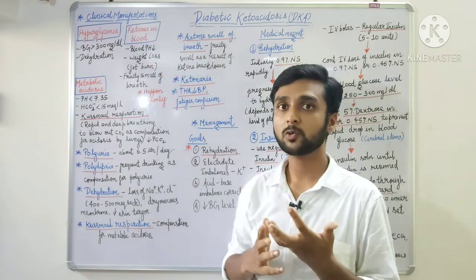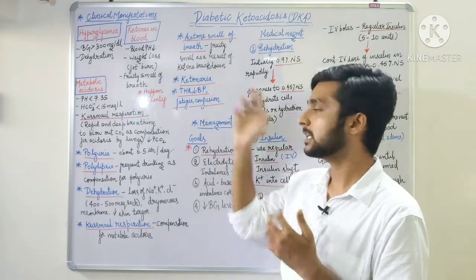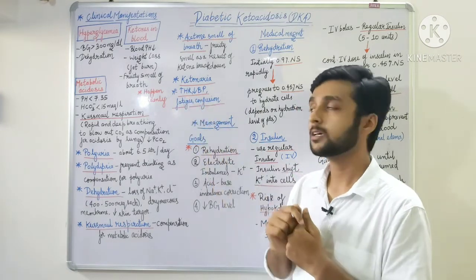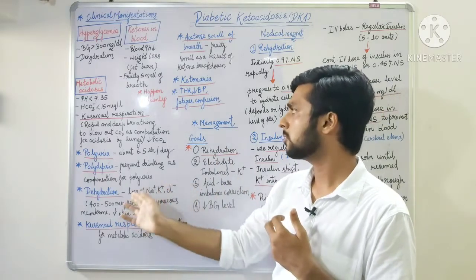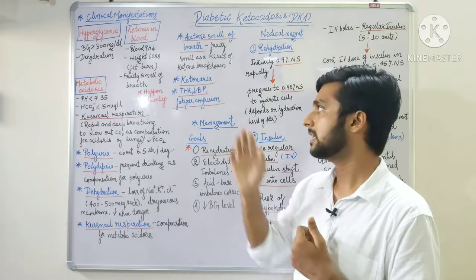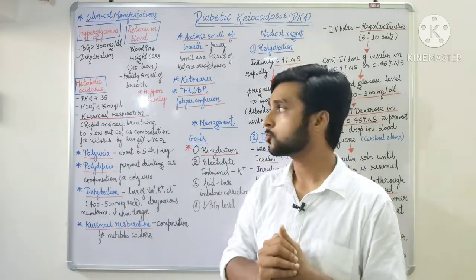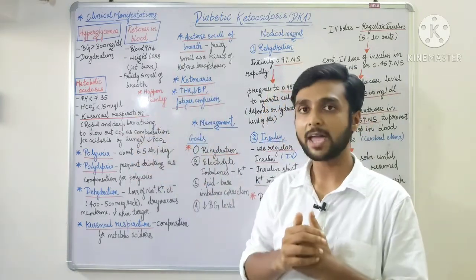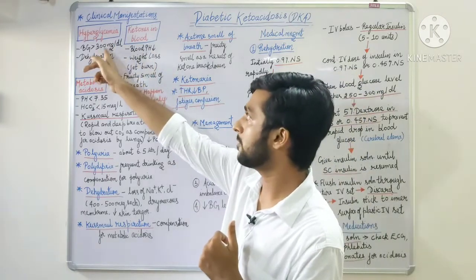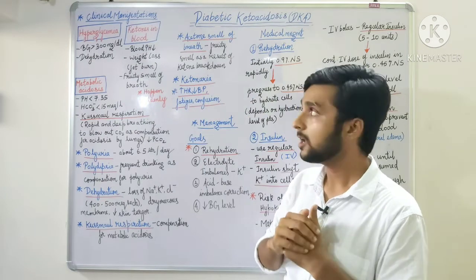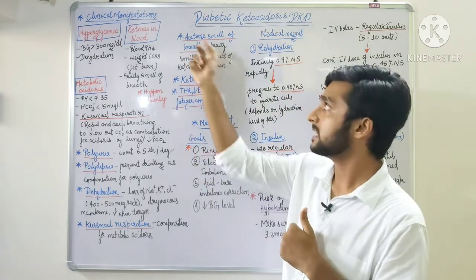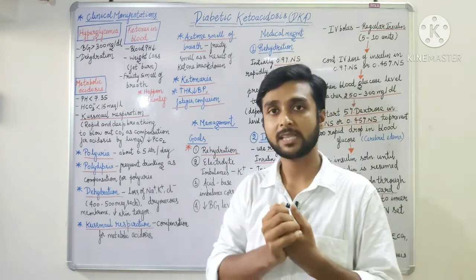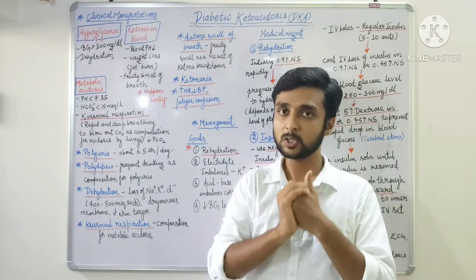Because many ketones are being produced, they can also be found in the urine — so we see ketonuria. Because of dehydration and fluid loss, heart rate will be increased and BP will be decreased. Because of electrolyte loss, the patient can go into fatigue, confusion, and lethargy. These are the clinical manifestations of DKA. Blood glucose more than 300 mg/dL, ketones in urine, acetone smell of breath, and Kussmaul respiration indicate the patient is going into DKA.